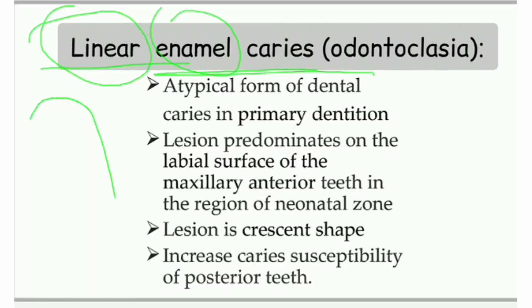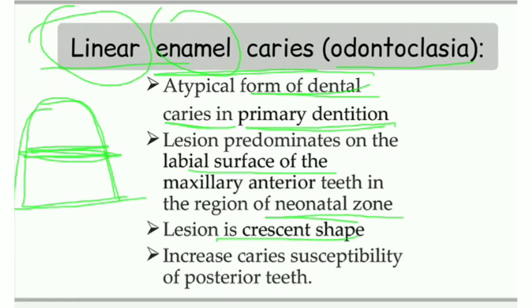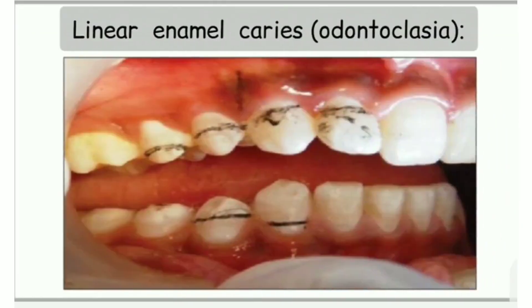On the central incisor, for example, it will be a linear area of cavity on the smooth surface. It is also called odontoclesia. It is an atypical form of dental caries in primary dentition. The lesion is prominent on the labial surface of maxillary anterior teeth in the region of the neonatal zone. The lesion is crescent-shaped and there is increased caries susceptibility of the posterior teeth. You can see this typical picture of linear enamel caries.